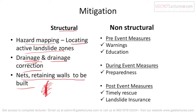Another measure is afforestation. Earth flow happens when the earth is loose and free, but if we plant trees, the roots control the earth and prevent it from flowing. Non-structural mitigations include issuing warnings about high-risk areas and providing education on what to do if a landslide occurs.